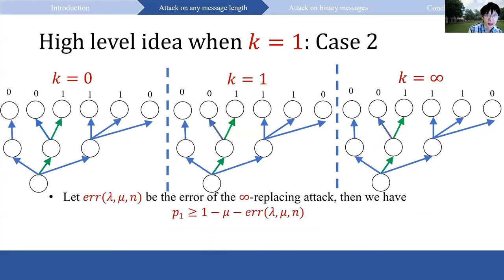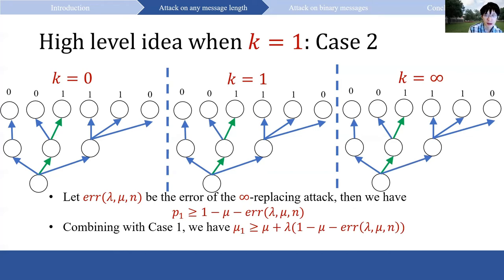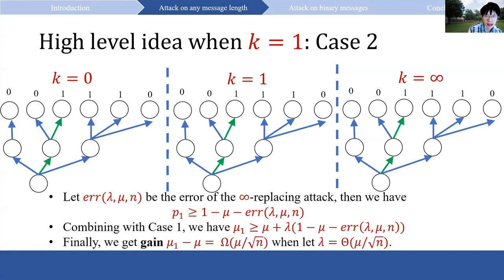Let p_1 be the probability that the one-replacing attack happens, and mu_1 be the expectation of b equals 1 after one replacing attack. We have mu_1 ≥ mu + p_1 · lambda, so we only need to lower bound p_1. When p_1 is small, the adversary still gets a large probability that b prime equals 1 — the green path does not change, and since the infinity-budget attack is based on this k=1 attack, it already gives the same result. From prior literature, when k equals infinity the probability goes close to 1, so this portion already closes to 1 even when k equals 1. Letting the ERR function be the error of the infinity-replacing attack, we get p_1 ≥ 1 − mu − ERR, and combining both cases: mu_1 ≥ mu + lambda · (1 − mu − ERR). When lambda is set to theta(mu / sqrt(n)), we get a bias of omega(mu / sqrt(n)).